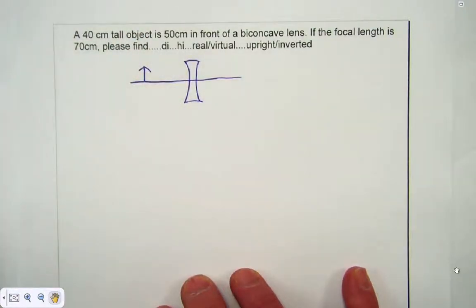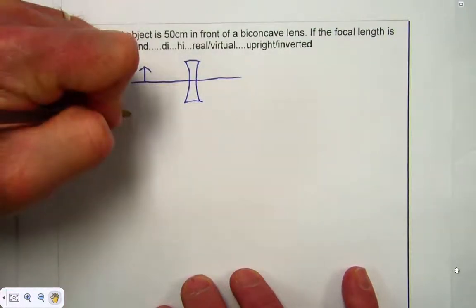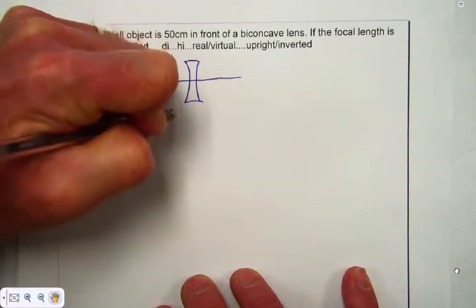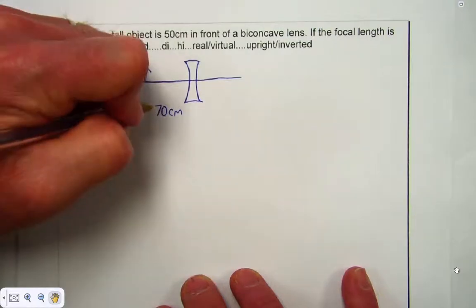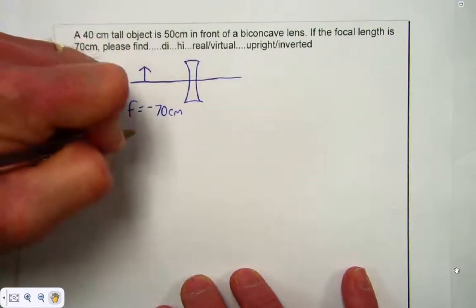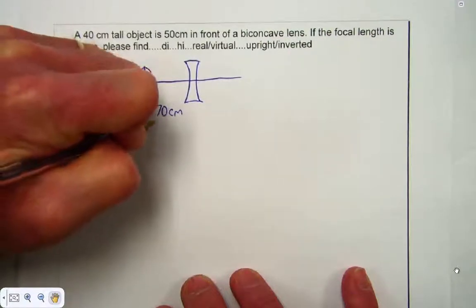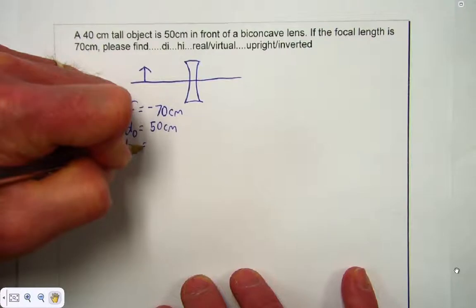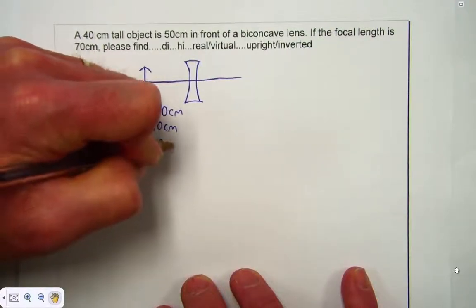Next thing we'll do is write my variables down. The focal length is 70 centimeters, and since this is a biconcave lens, that will always be negative. The object distance is 50 centimeters from the lens, and we find out that h_o is 40 centimeters tall.